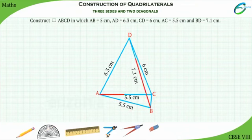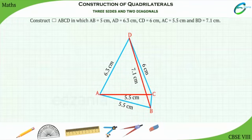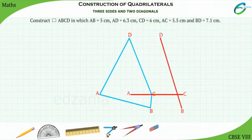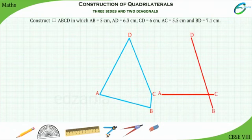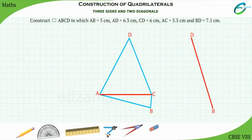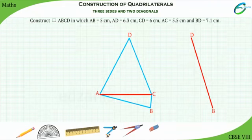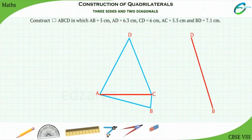Always remember, whenever the diagonal of the quadrilateral is given, start the construction by selecting the diagonal. Here we can see that the diagonal AC divides the quadrilateral into two triangles, the upper triangle ADC and triangle ABC.